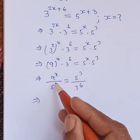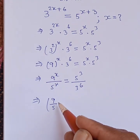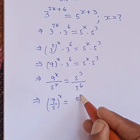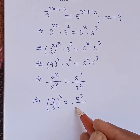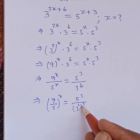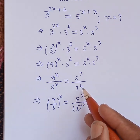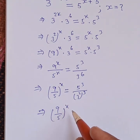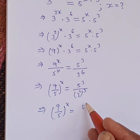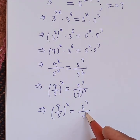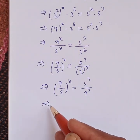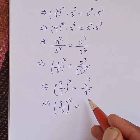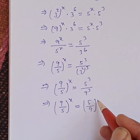This equals 9 by 5 whole to the power of x is equal to 5 cubed divided by 3 squared, whole cubed. Since 3 squared whole cubed means 3 to the power 6, this implies 9 by 5 to the power x is equal to 5 cubed divided by 9 cubed, which implies 9 by 5 to the power x is equal to 5 by 9 to the power 3.